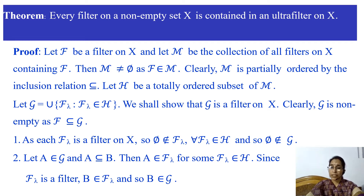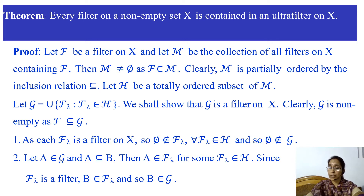Now we have to check all the properties of a filter. As each F_lambda is a filter on X, phi does not belong to F_lambda for all F_lambda in H, and so phi does not belong to the union, that is, phi does not belong to G.